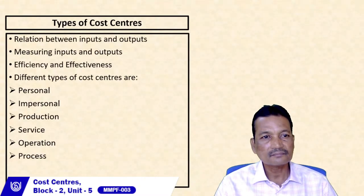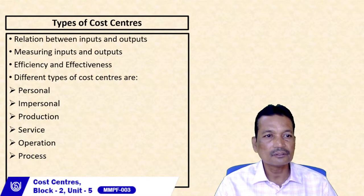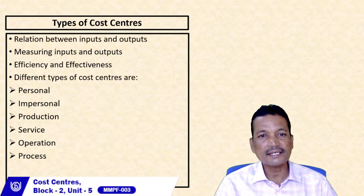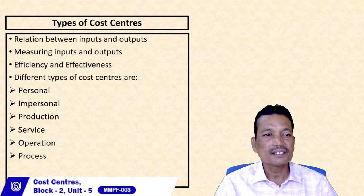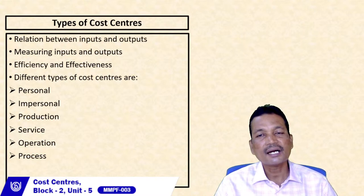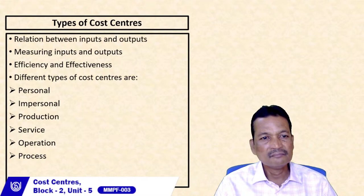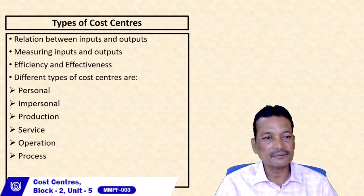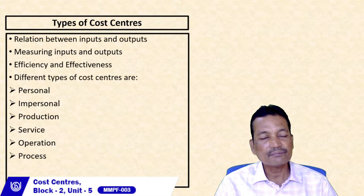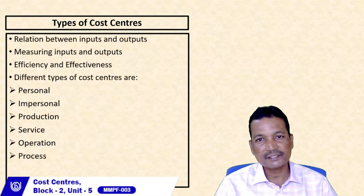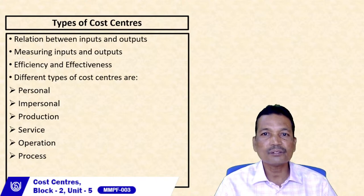When looking at types of cost centers, we examine the relationship between inputs and outputs, which can be measured in monetary terms. The relationship tells us how much resource input has been used and how much output has been generated. Efficiency refers to how well things are done, while effectiveness means how well resources are being used.